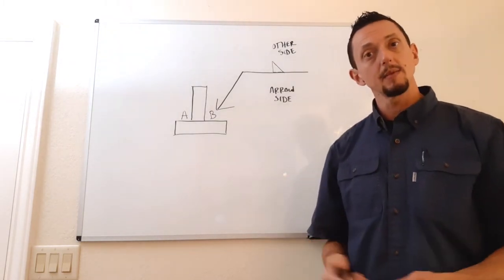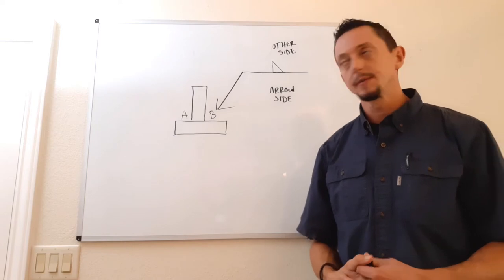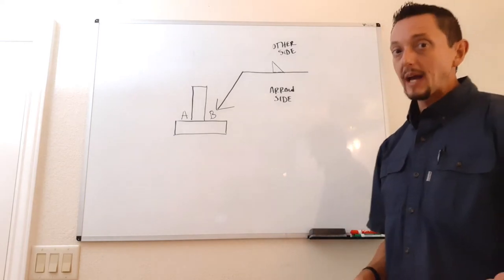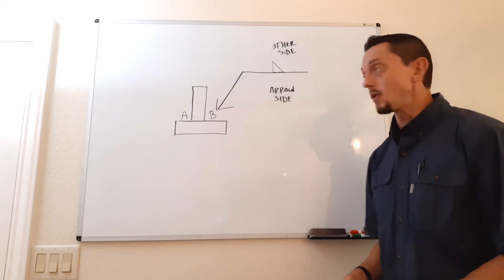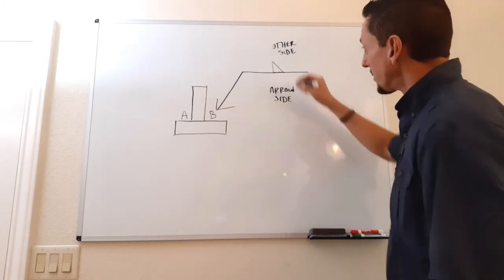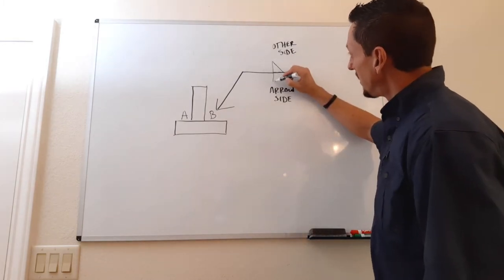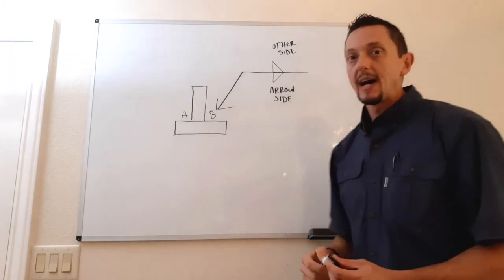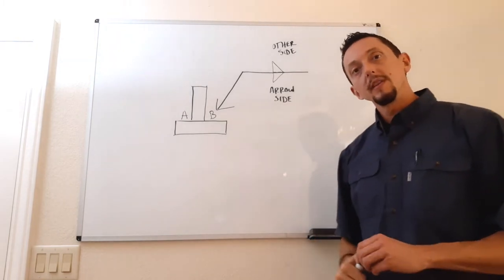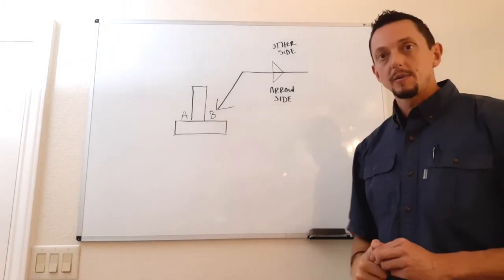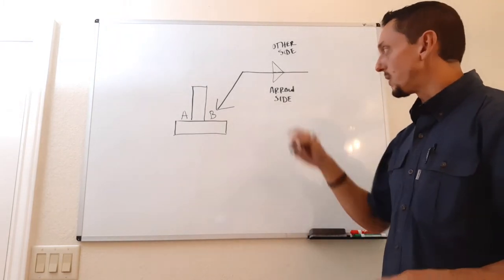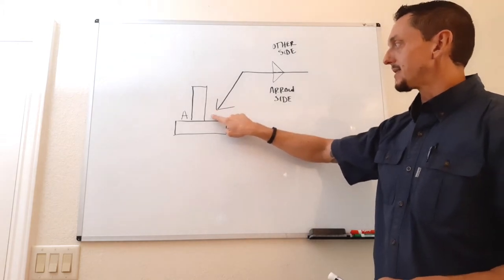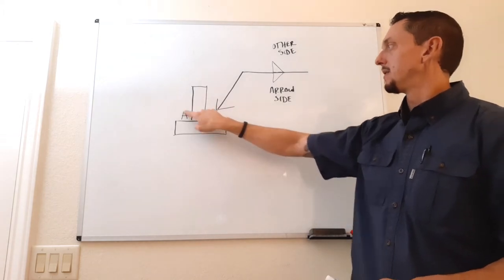Sometimes we have both sides of the joint specified, so we would have a weld symbol on both the other side and the arrow side of the reference line, and then we'd have weld placement on both sides.